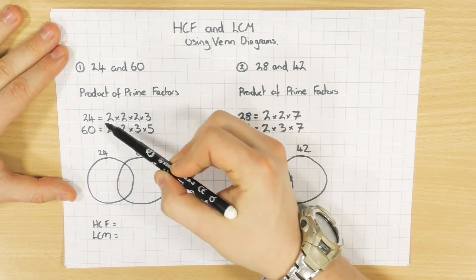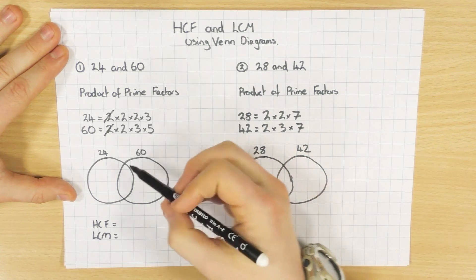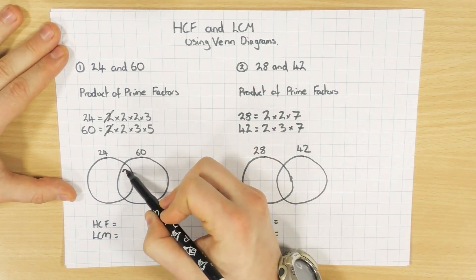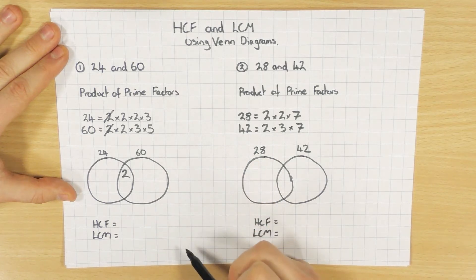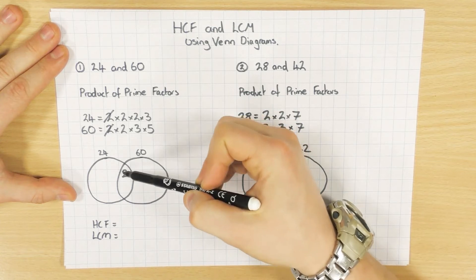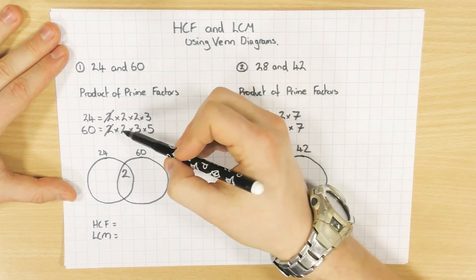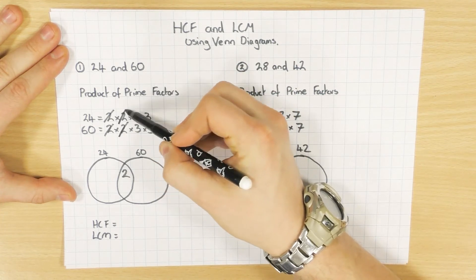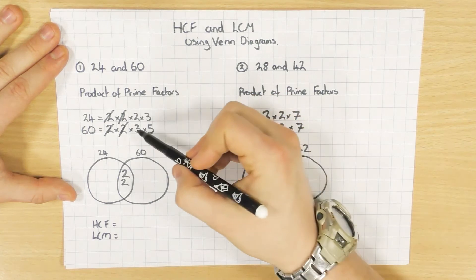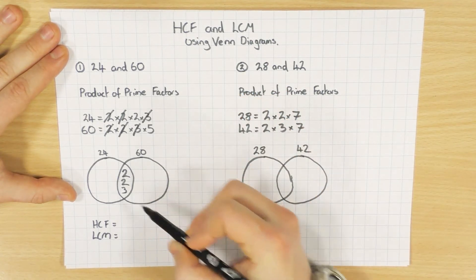So I've got 2 and 2 — I'm going to cross that one off there, cross that one off there. Remember with the Venn diagram, if anything is the same to both, it goes in the middle. So I've only put one 2 in there because 2 was the same to both. I've got another 2 — that's the same to both, so that also goes in the middle. And I've got a 3, so a 3 goes in there as well.